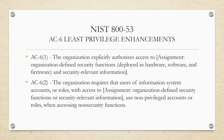For AC-6 Enhancement 2, the description reads: the organization requires that users of information system accounts or roles with access to a defined security function or security information use non-privileged accounts or roles when accessing non-security functions. Essentially, your IT administrators or privileged users will have two accounts, and when performing basic job duties not related to a security function, they use their regular non-privileged account. That's key.